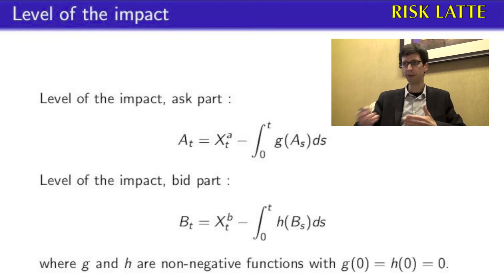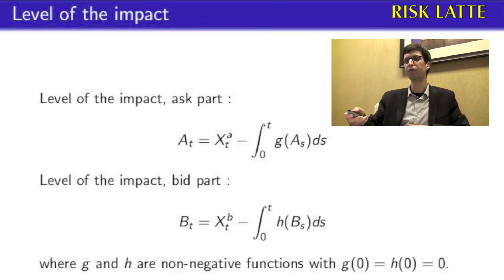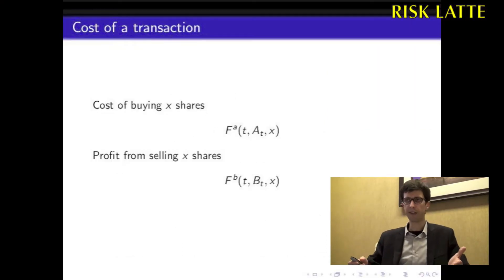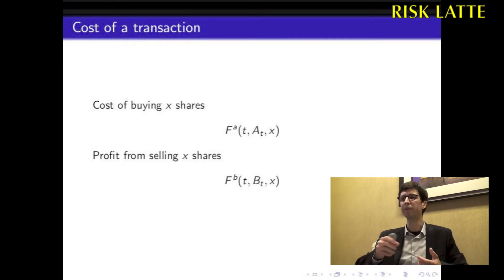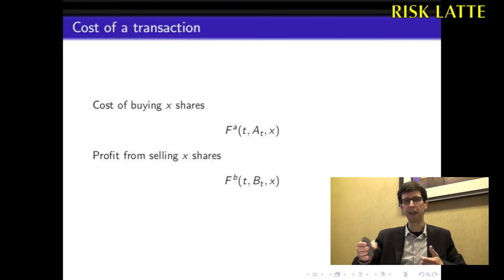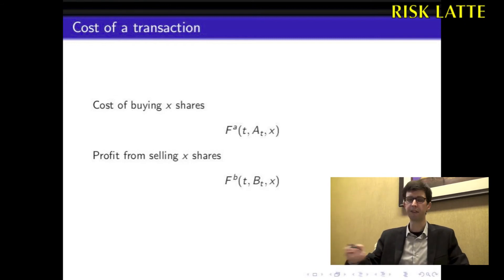This was for the ask part. The bid part is defined the same way, except that we use BT equal to XDB, where XDB is the total number of shares sold up to time T. Finally, we can define the cost of a transaction. The cost of buying X shares at time T is FA(T, AT, X), where AT is the level of impact and X is the size of the transaction. The profit from selling X shares uses the bid part: FB(T, BT, X), where BT is the level of impact for the bid part and X is the size of the sale.